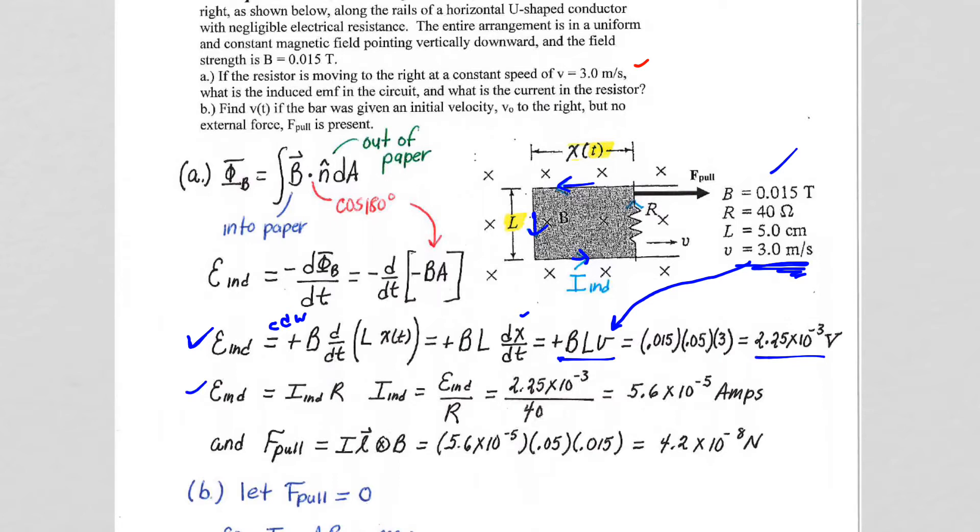We have V equals IR, so that will be the current that is generated due to the induced EMF. We still have IL cross B, so we have the IL, right? We have the IL cross B into the paper, so the magnetic force is still going to be to the left.